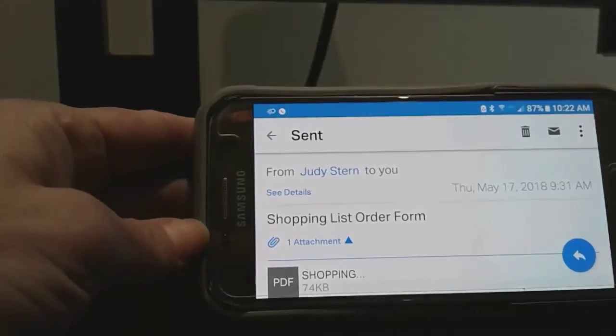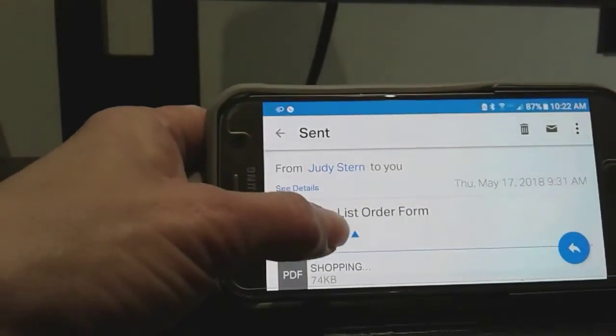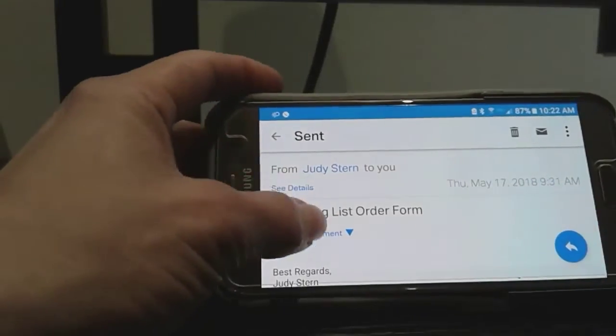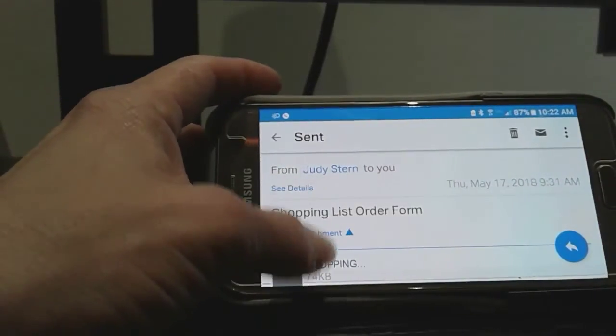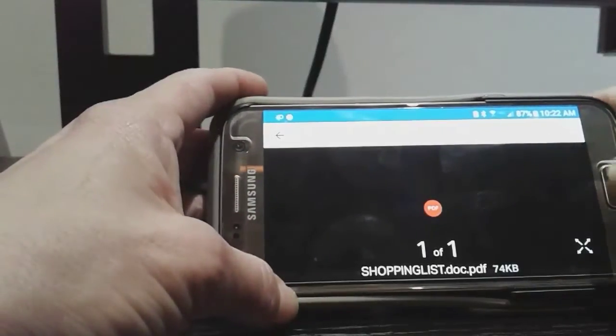So in this case, I've got my email open and I have my PDF attached. I'm just going to click on the attachment link. I'm going to click on the PDF, and there you can see that it's ready to open it.